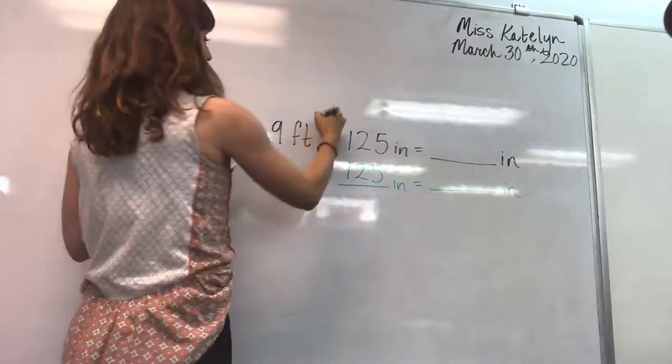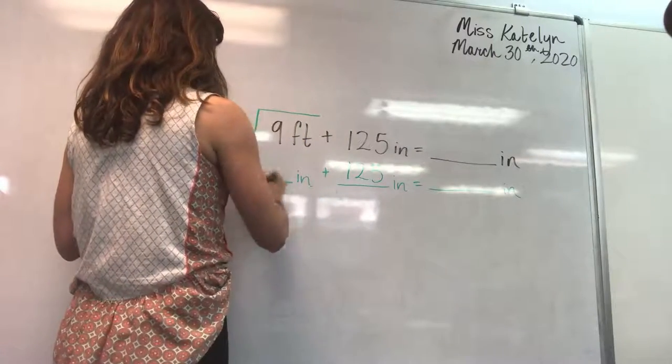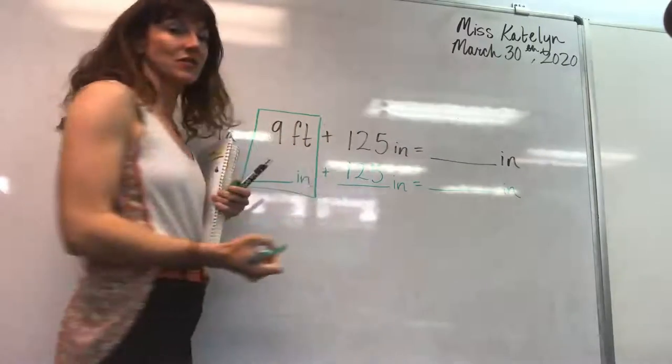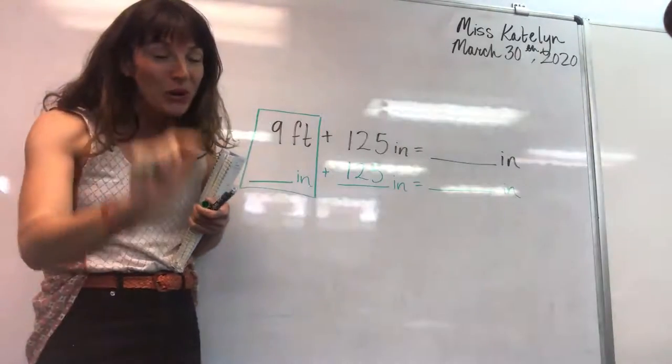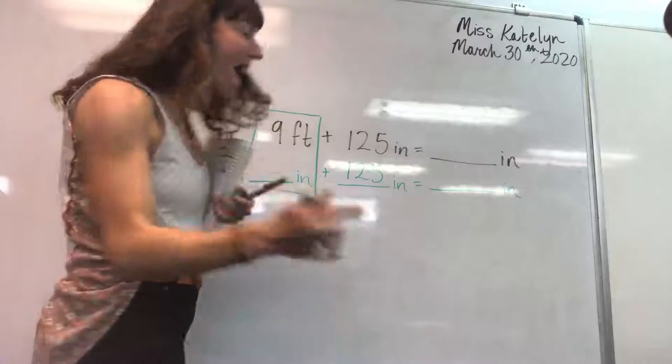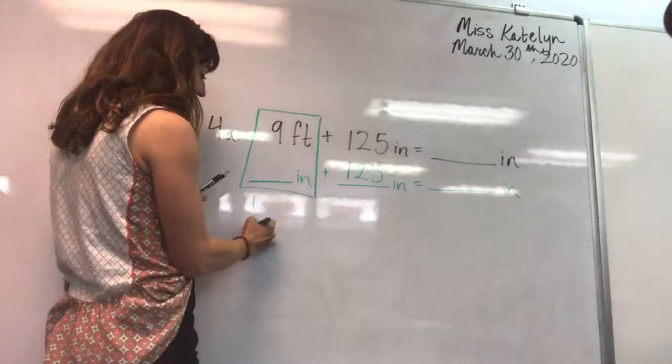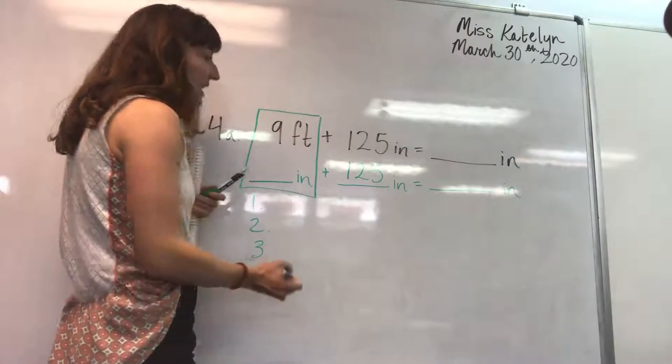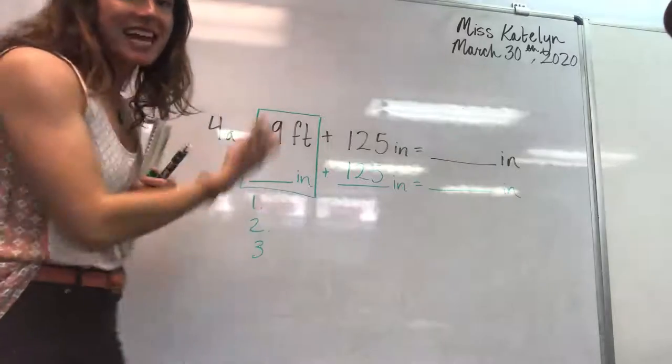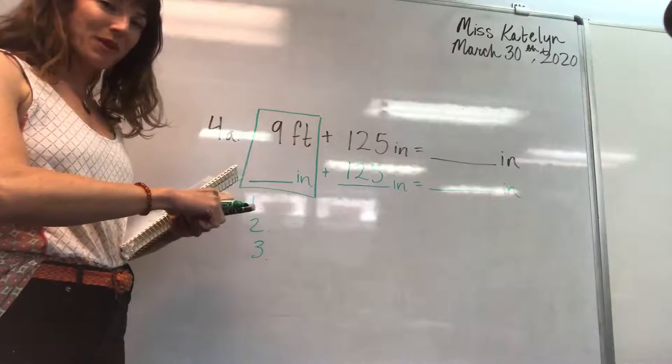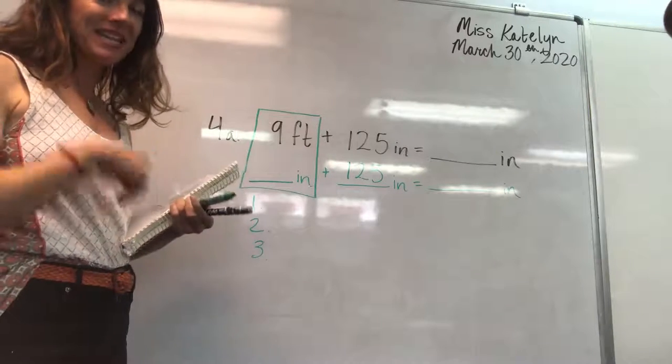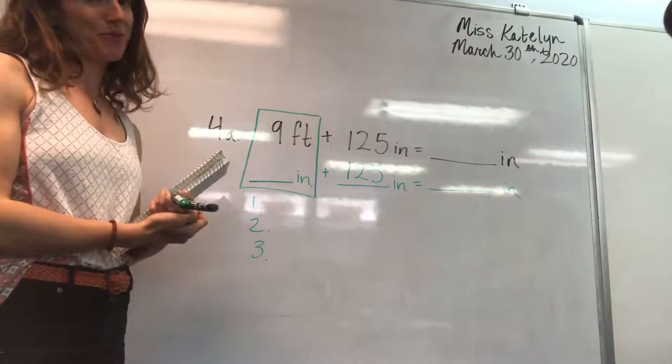Step number three, box the difference. Being careful to avoid all mathematical symbols. And step number four, one, two, three, below that box. One, two, and three. All right. So that's your setup for measurement story problem 4A. It is up to you to finish the problem. And now I'm going to set up story problem 4B.